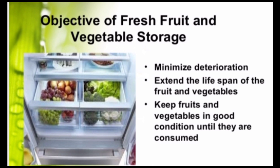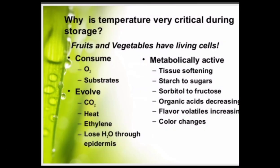Objective of fresh fruit and vegetable storage: to minimize deterioration and extend the lifespan of the fruit and vegetables; keep fruit and vegetables in good condition until they are consumed. Why is temperature very critical during storage? Fruits and vegetables have living cells that consume oxygen and substrates, and evolve carbon dioxide, heat, and ethylene, with moisture lost through the epidermis.